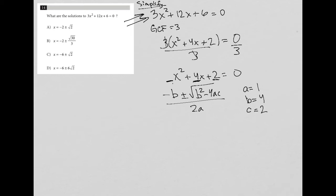So let's just plug that in. Negative b becomes negative 4 plus minus square root b squared, that's 4 squared. 4 squared is 16 minus 4 times a, which is 1, times 2, which is c, all over 2a, which is just 2.